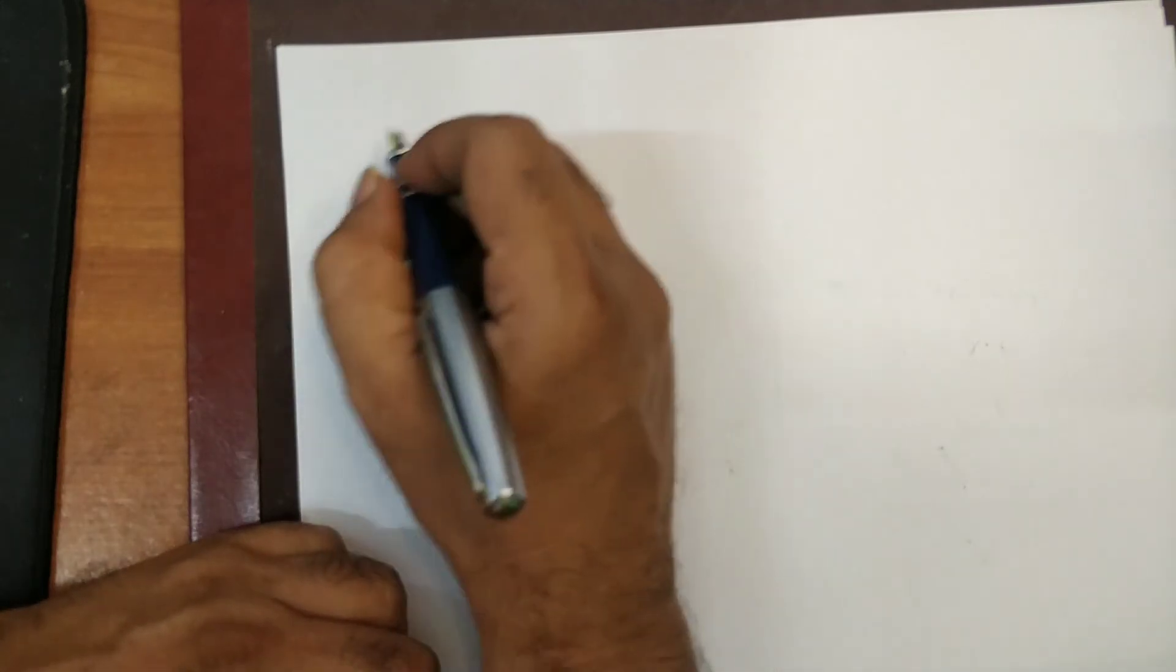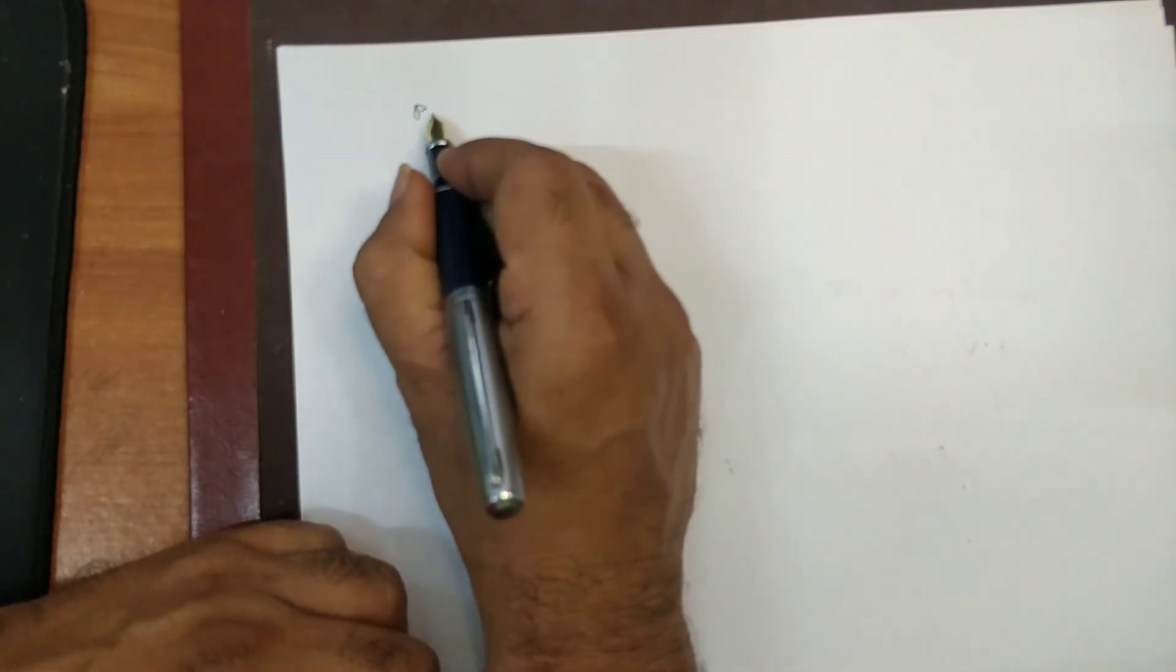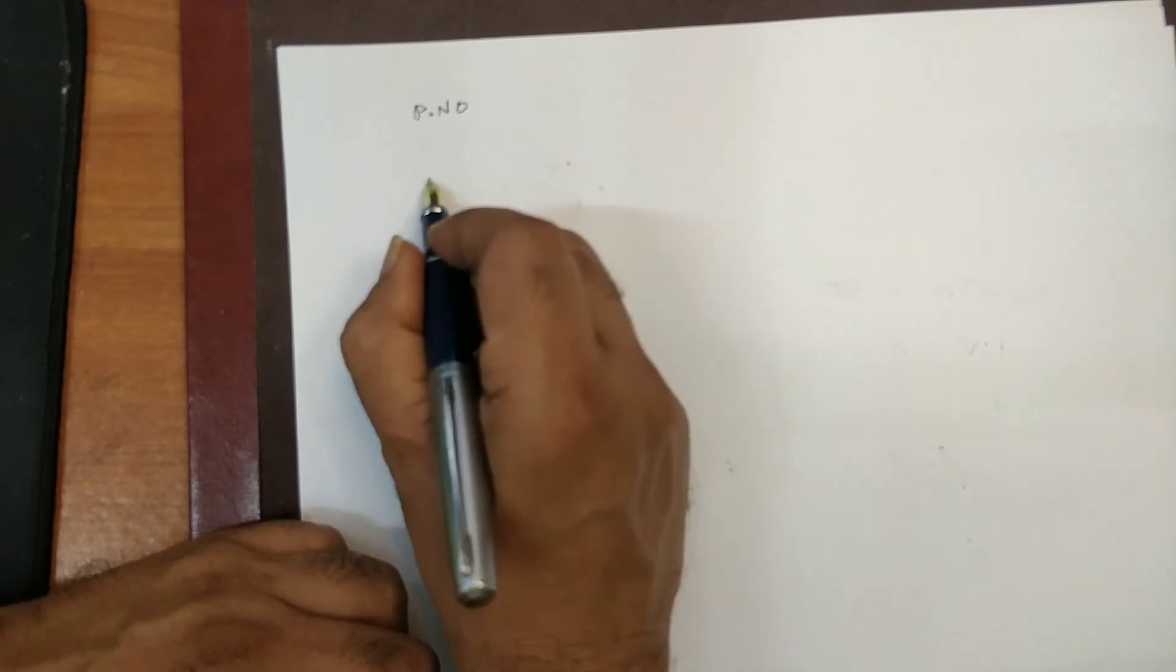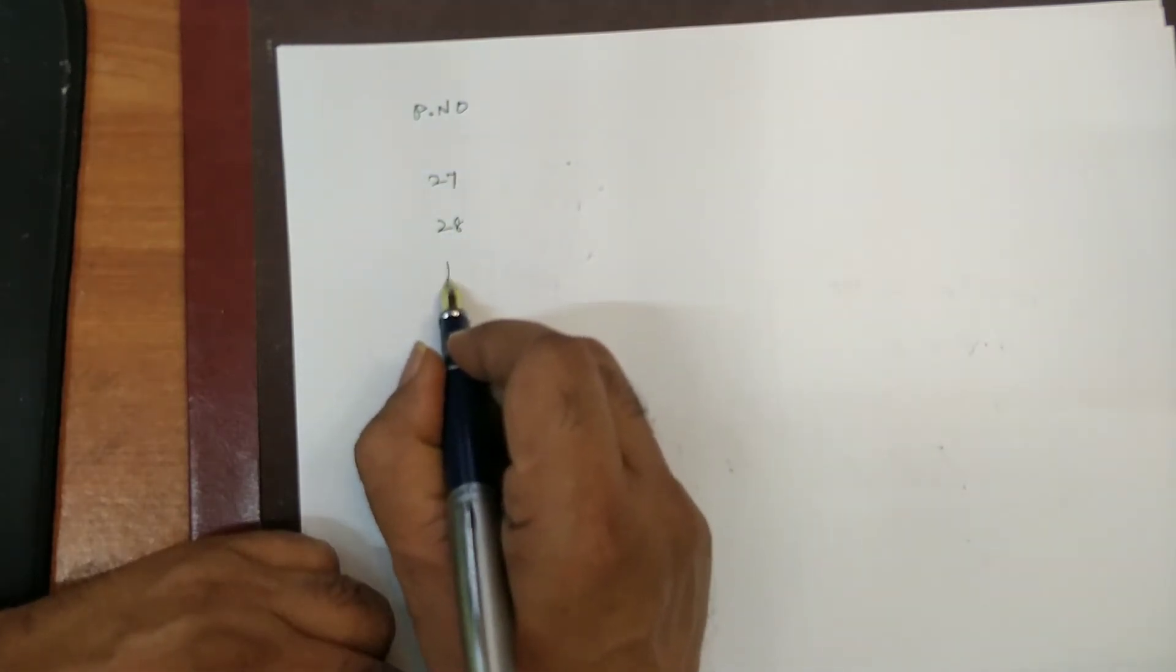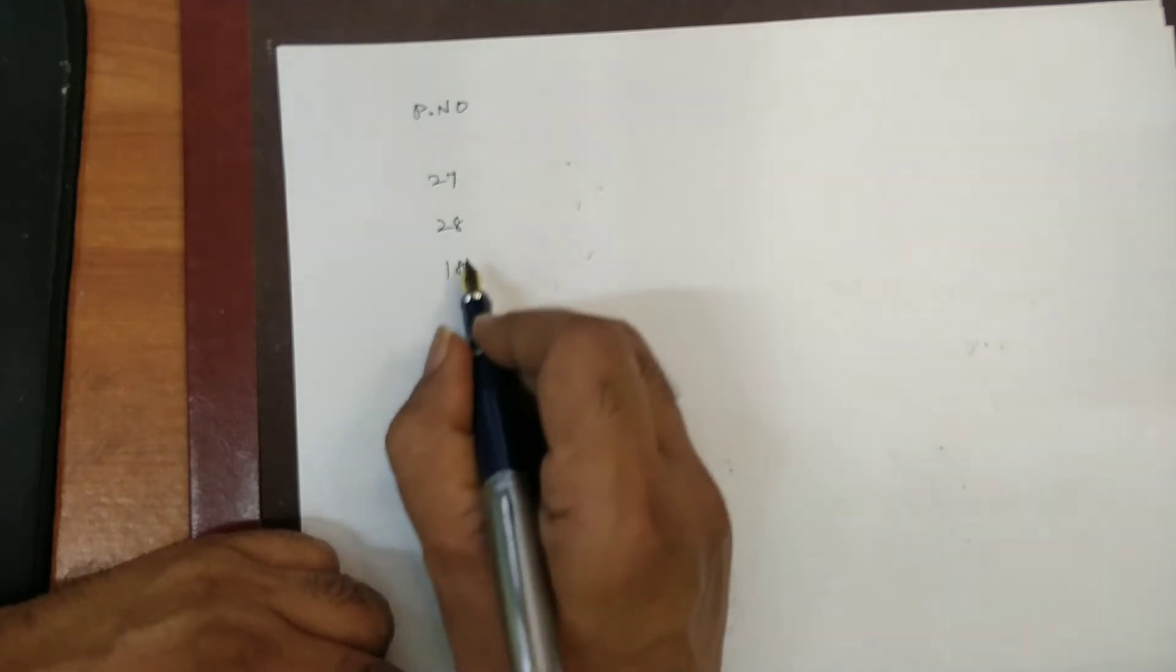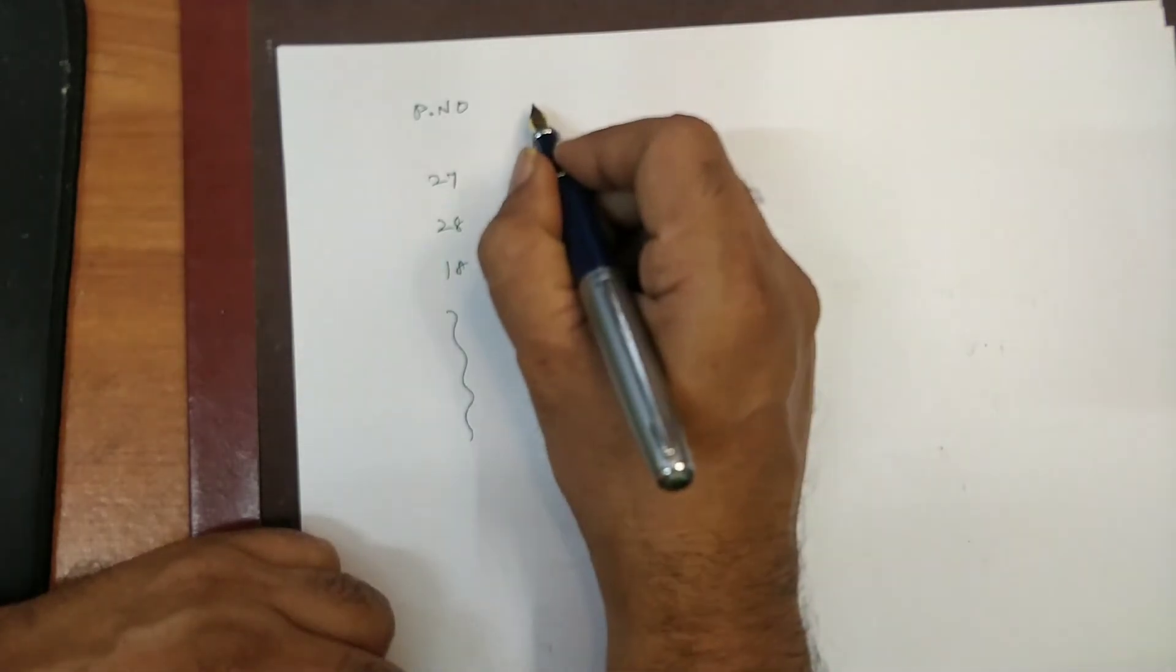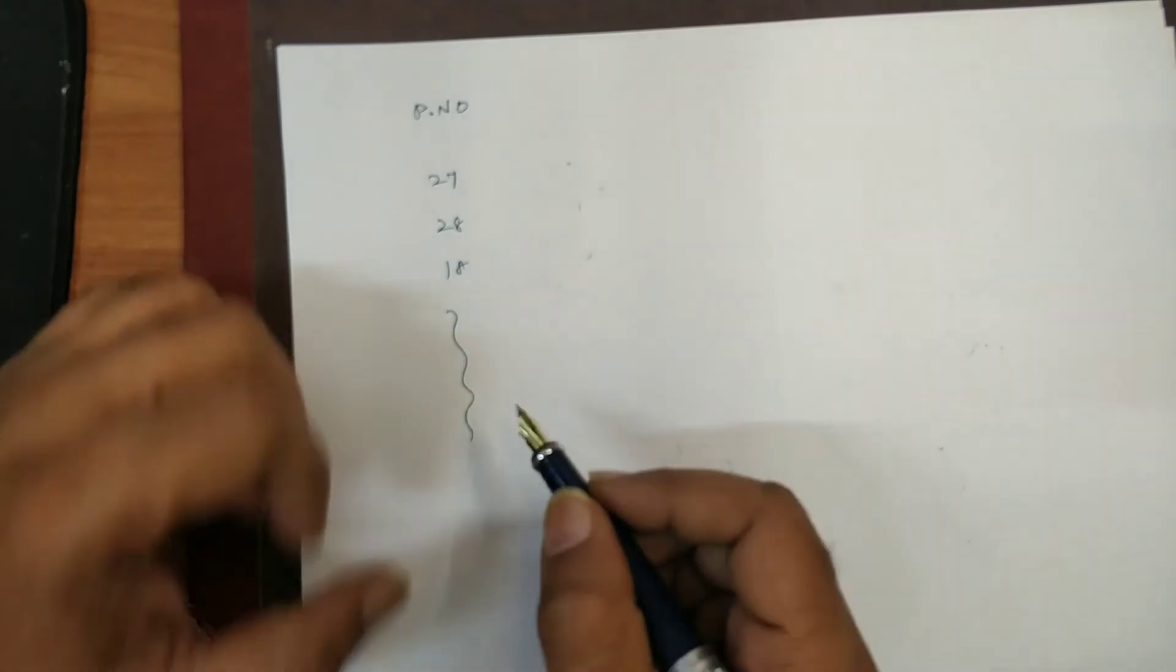So, I have identified the panel number. As some number I have given. 27, 28, 28 in panel number 18. So, I have taken various panel numbers like this. And I have identified all these panel numbers.